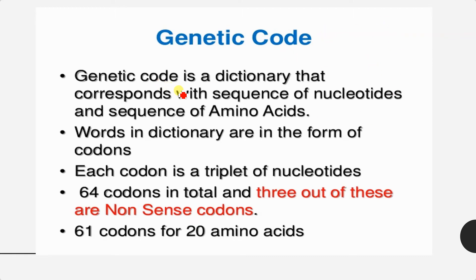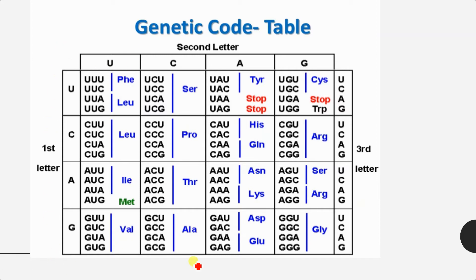The genetic code is a dictionary that corresponds with the sequence of nucleotides and the sequence of amino acids. Words in the dictionary are in the form of codons; each codon is a triplet of nucleotides and there are 64 codons in total. Three of these are nonsense codons serving as termination codons which do not represent any amino acids, and 61 codons synthesize the 20 amino acids. The dictionary lists the first letter as U, C, A, or G, followed by the second and third letters.